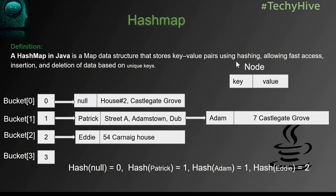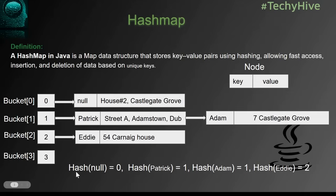The location of the entry in the HashMap is calculated by the hash function. The key is used to find the hash key, and then the hash key maps to a particular bucket. So a HashMap can be considered as a collection of buckets, where each bucket is identified by the hash key. In this example, we have keys: null, Patrick, Eddy, and Adam. For the null key, the hash function gives bucket location zero, so this element is inserted at index zero in the bucket.